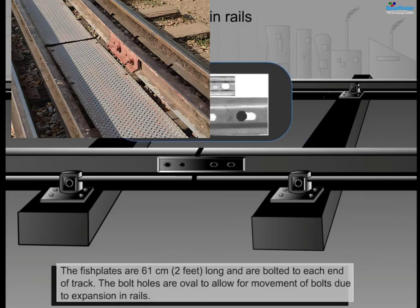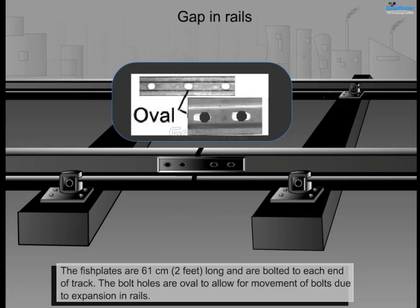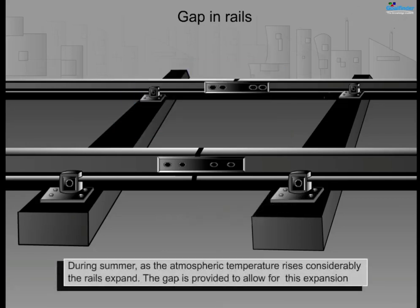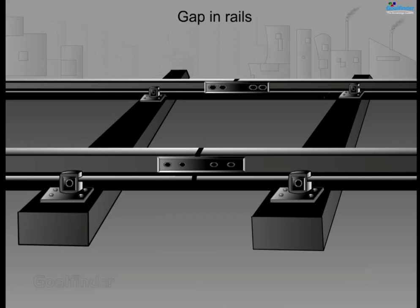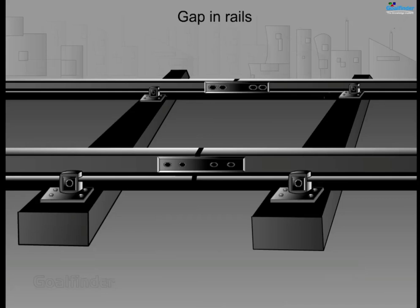The fish plates are 61 centimeters (2 feet) long and are bolted to each end of the track. The bolt holes are oval to allow for movement of the bolts due to expansion in the rail. During summer, as atmospheric temperature rises considerably, the rails expand. The gap is provided to allow for this expansion; if no gap is left, the expansion will cause the rails to bend sideways.